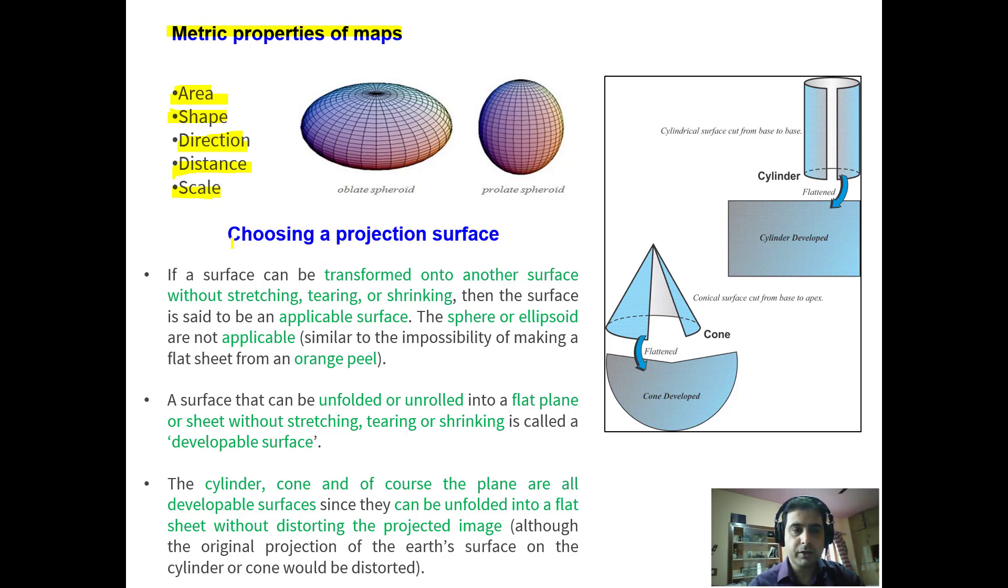Now how are we going to choose a projection surface? If any surface can be transformed into another surface without stretching, tearing or shrinking, then the surface is said to be applicable surface. In that case oblate spheroid or ellipsoid, those are not applicable surfaces. Like if an orange peel is there and we try to lay that orange peel on a 2D surface, it can be done but only with all the imperfections. It cannot be perfectly laid as a 2D surface.